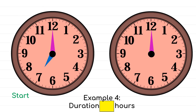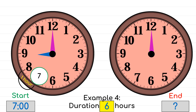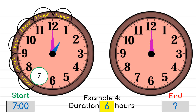In this second example, we are given the starting time pointing at 7 o'clock and a duration of 6 hours. We want to find the ending time. Using hops, we start hopping from 7 — one hop means one hour, so we hop 6 times. After hopping 6 times, the clock is now pointing to 1 o'clock, and that is our ending time.